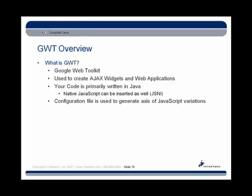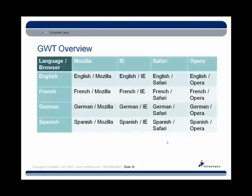We use an XML configuration file to generate all of the JavaScript files we'll need for our application. So let's say we want to write a web application and we've internationalized it. If you're unfamiliar with the process of internationalizing an application, I'll be demonstrating that briefly in part three. But let's say we've done that and we want to support English, French, German, and Spanish.